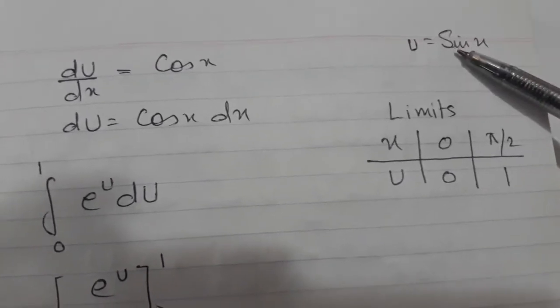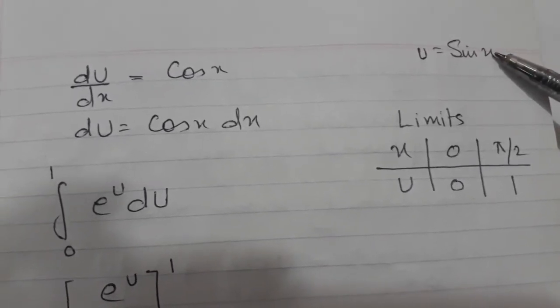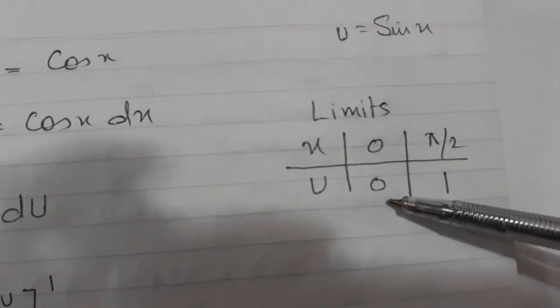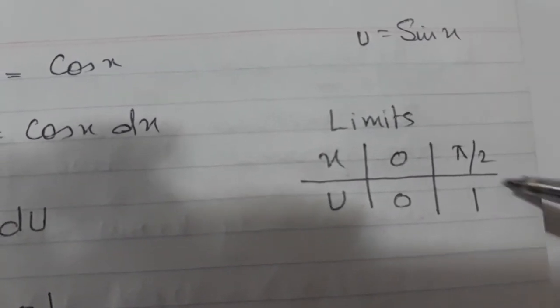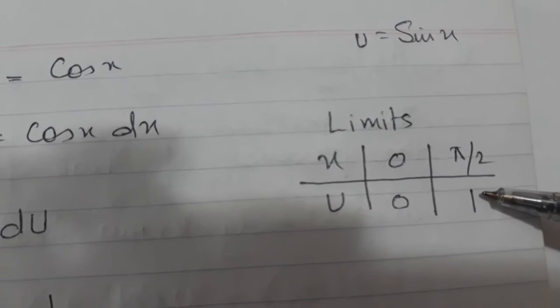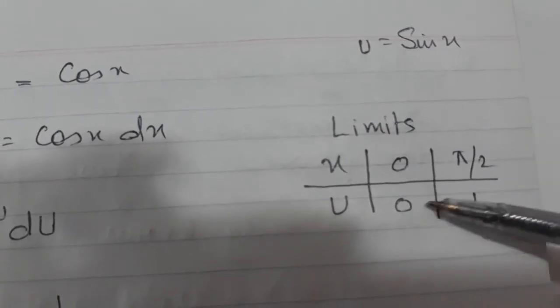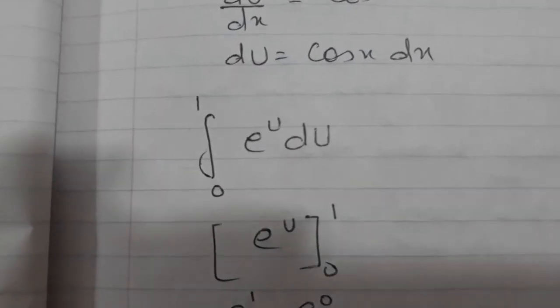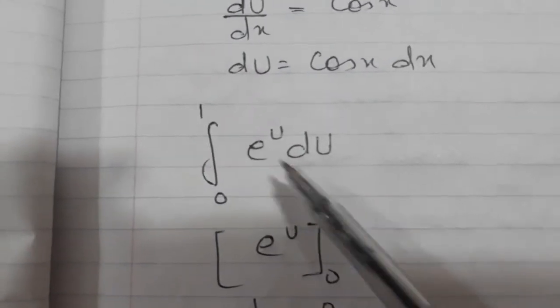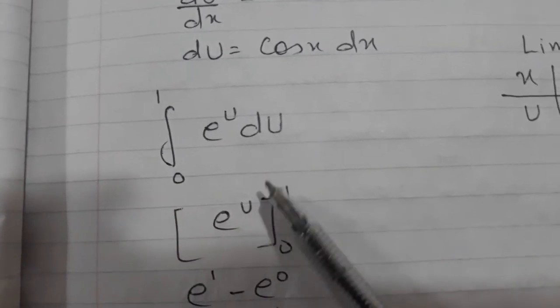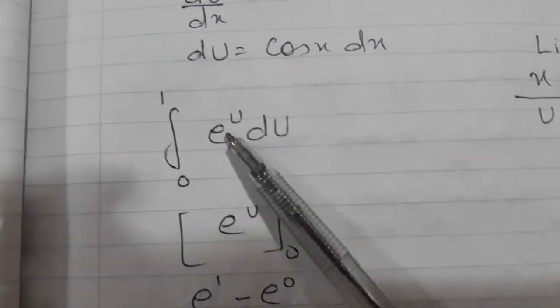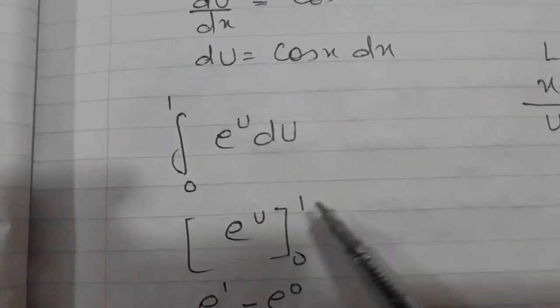In this substitution, in place of x, if I write 0, sin 0 is 0, so u will be 0. If I write sin pi by 2, sin pi by 2 is 1, so I will get u equals 1. So my limits instead of 0 to pi by 2 will become 0 to 1. That's why I have taken limit here 0 to 1. This is the substitution. After integration, because integration of e power u will be e power u, I am applying limit.